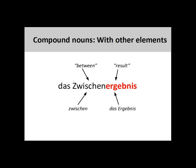Finally, it is important to note that other elements besides nouns — such as adjectives, adverbs, verbs, and prepositions — can be used to form compound nouns. The final element in a compound noun, however, must be a noun. The compound noun you see on the screen, das Zwischenergebnis, interim result, is comprised of the two-way preposition zwischen, between, and the neuter noun Ergebnis, result.